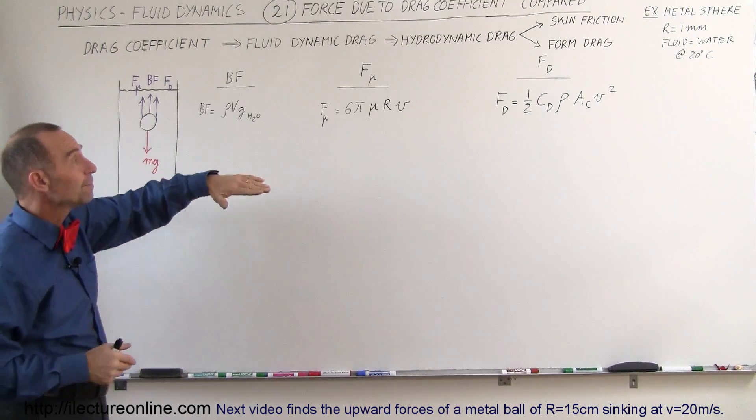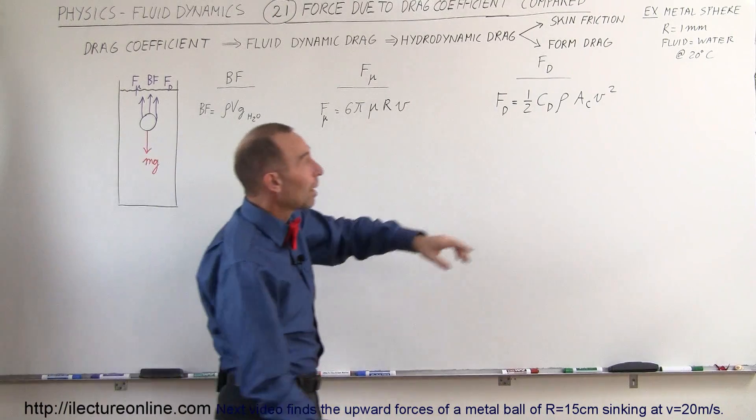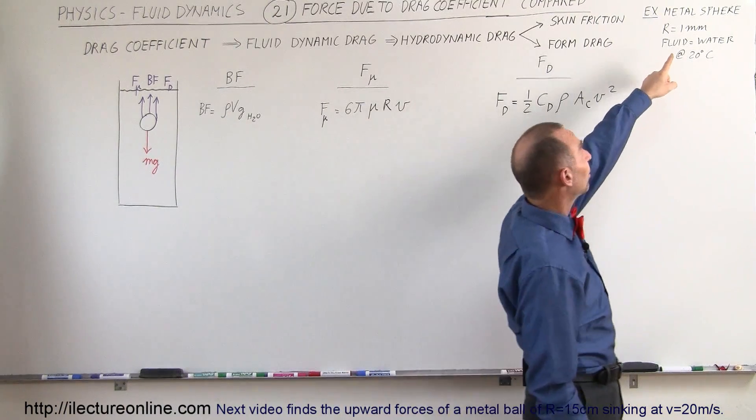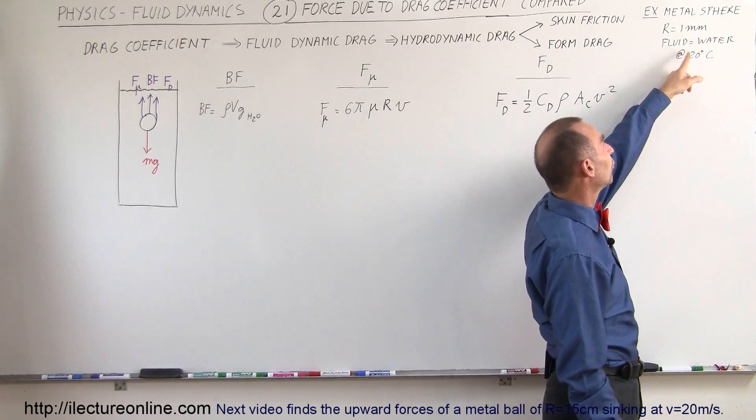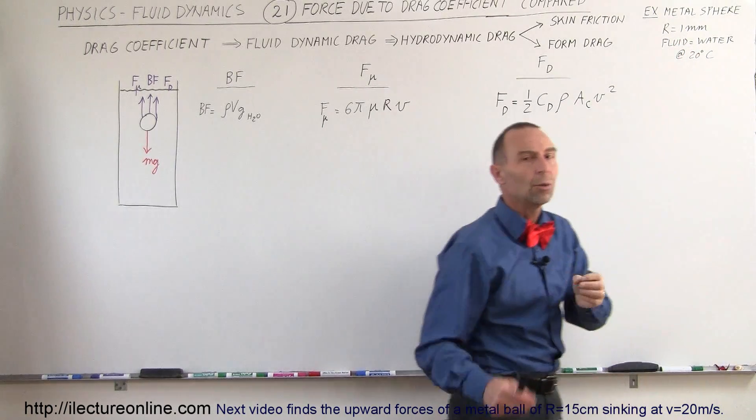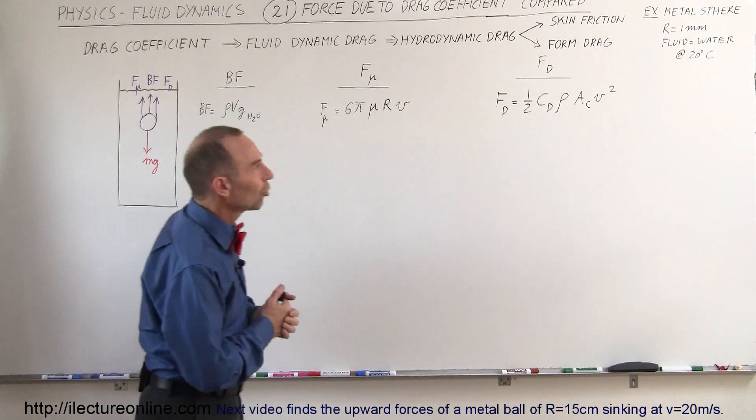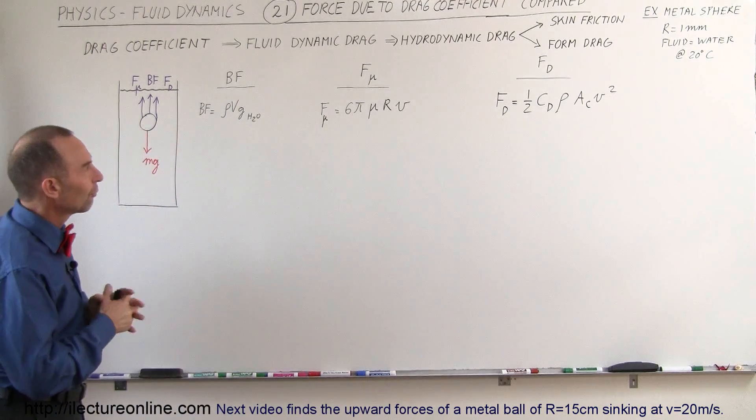We're going to calculate all three in the particular case where the object is fairly small. It's a metal sphere with radius 1 millimeter. The fluid is water at 20 degrees Celsius, from which we can find the associated viscosity coefficient.